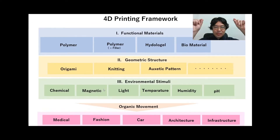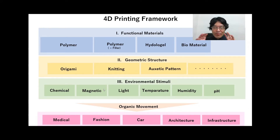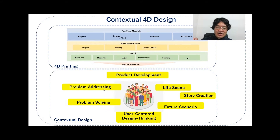Last year I introduced our 4D printing-based design framework. The first layer is functional materials. The second layer is geometric structure. The third layer is environmental stimuli. By combining these three important factors in a very artistic way, we can realize very beautiful and organic movements, and there would be lots of future applications in various fields.